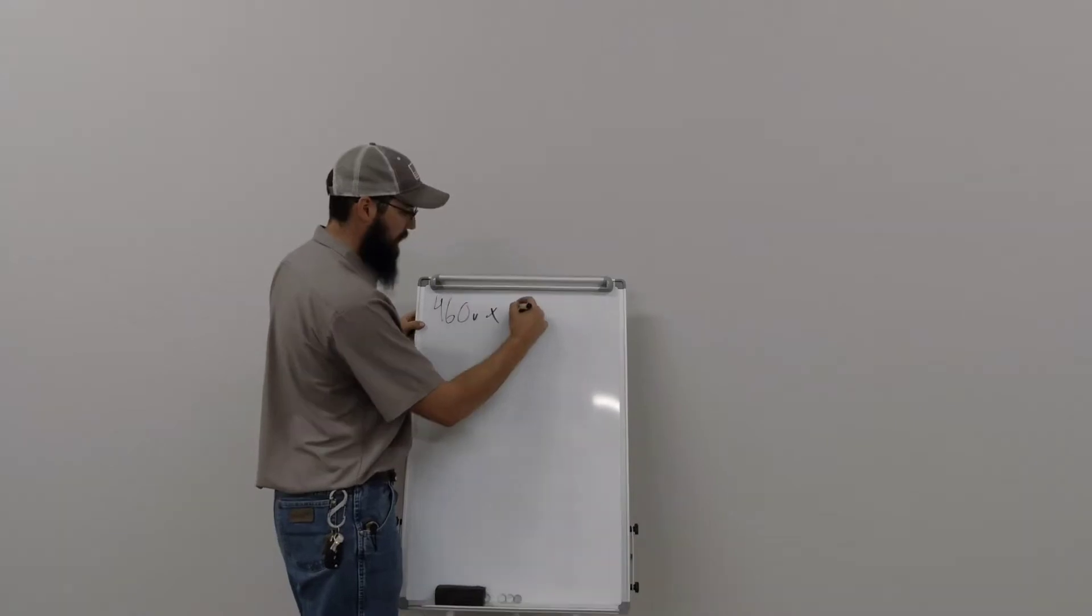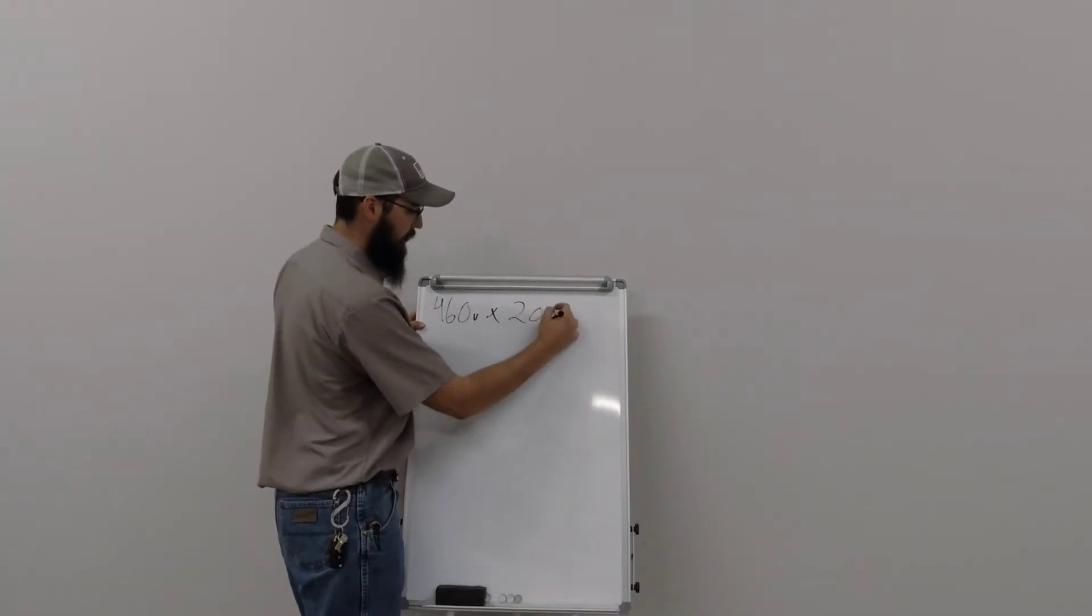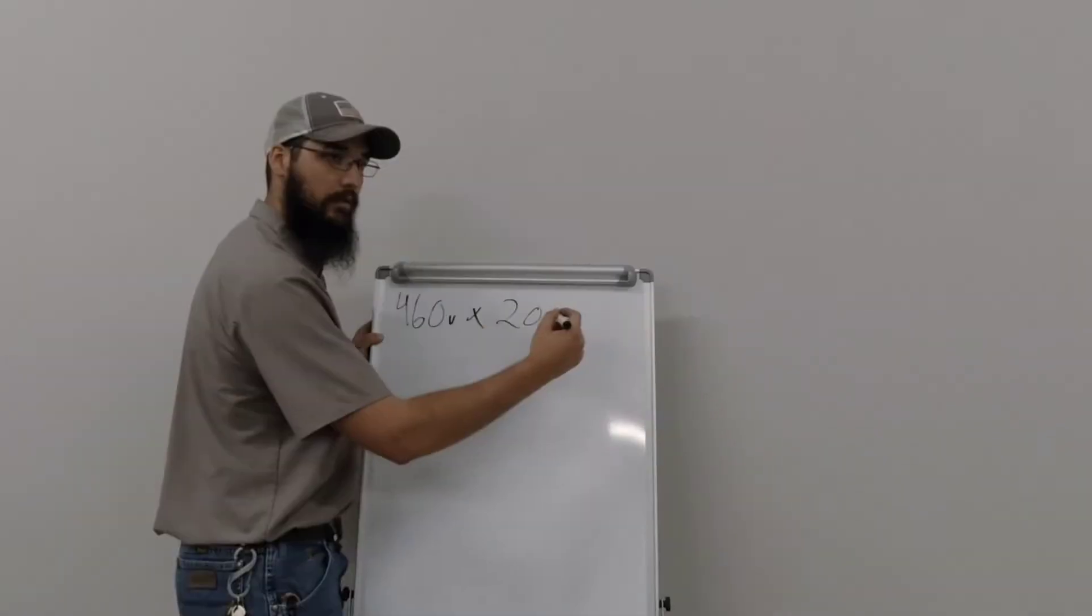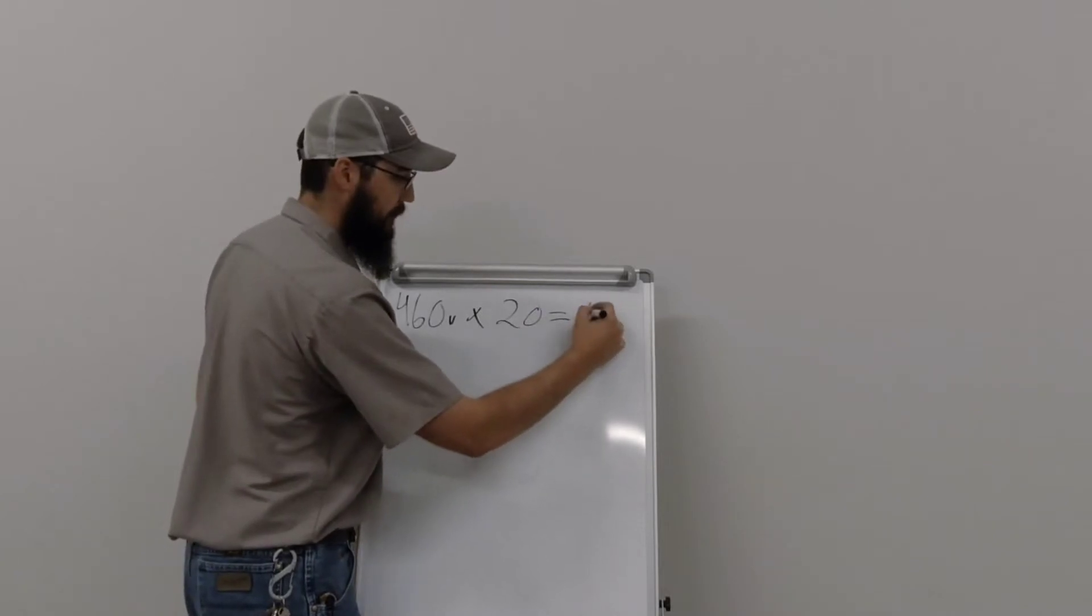460 volts. You multiply that by the 20 amps. That gives you what? So 9.2K? 9200.